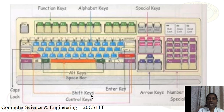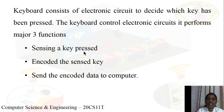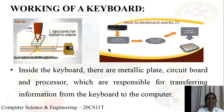This is the standard layout of the keyboard and the arrangement of its key groups. Next, we will see the working of the keyboard. The keyboard consists of an electronic circuit that performs three major functions: it senses the key whenever a key is pressed, encodes the sensed key, and sends the encoded format to the computer.